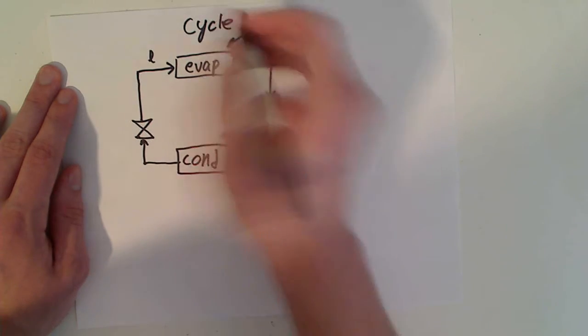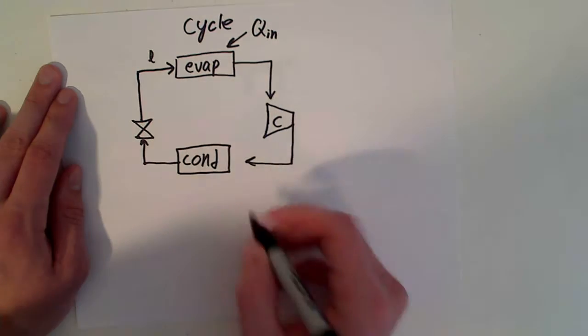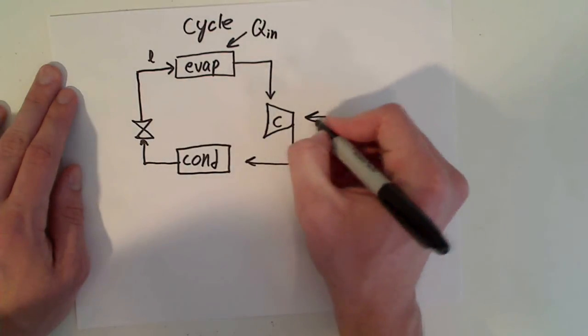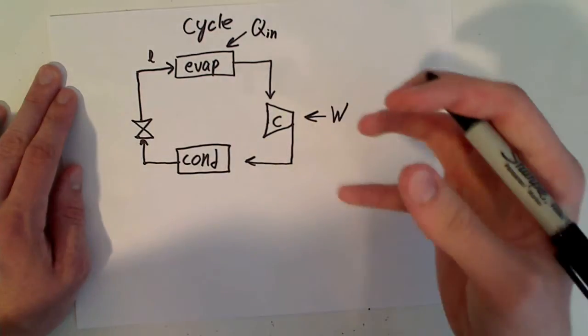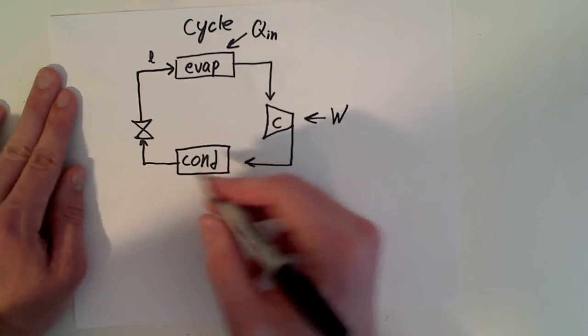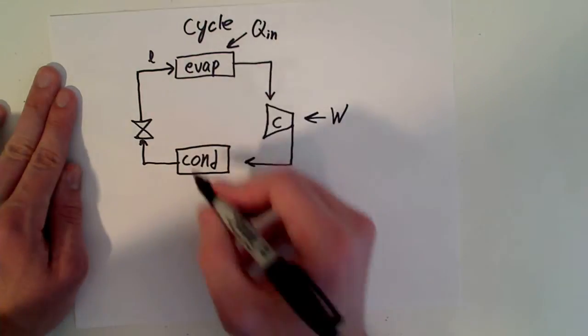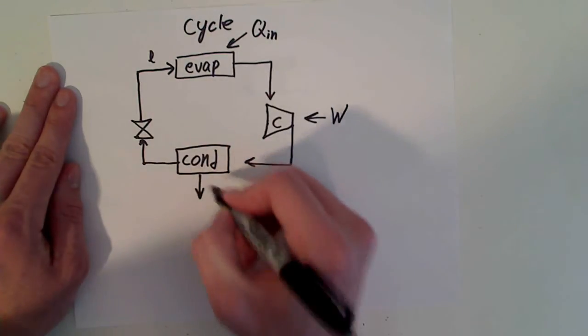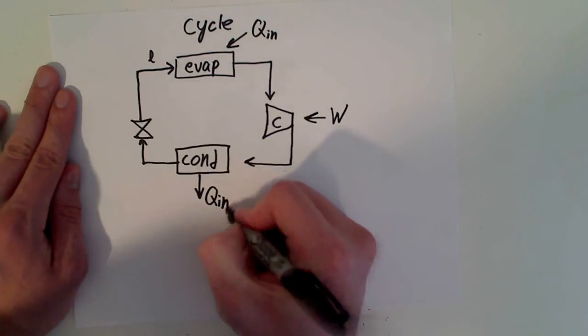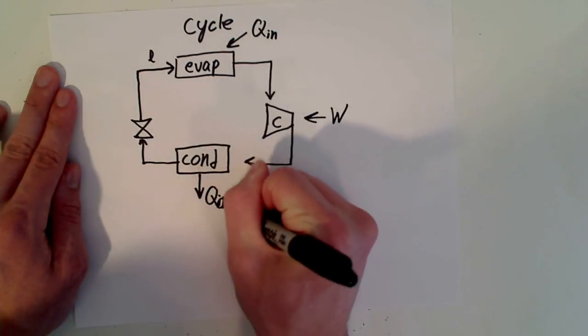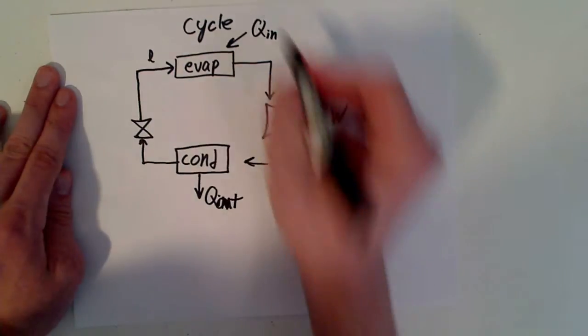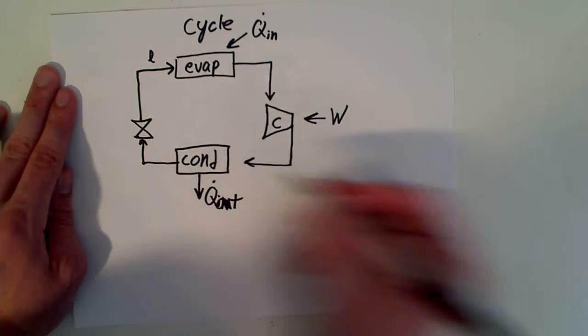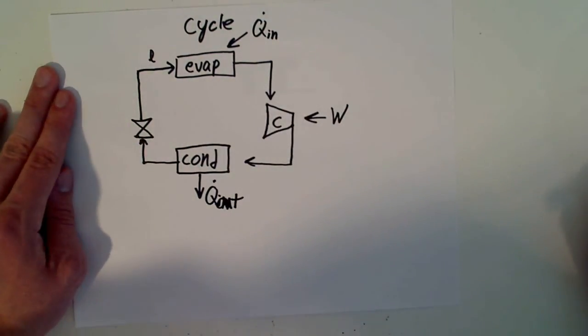And that then goes into the compressor, which we need to put work in there to compress it, so we can condense it and take that heat we took over there and just spit it out somewhere where we don't need it, or don't care that it's warming it up.